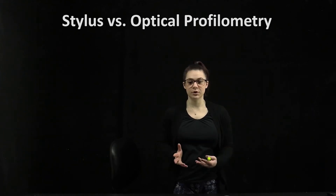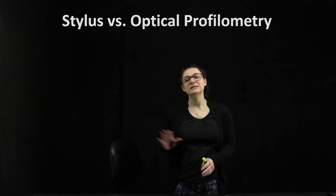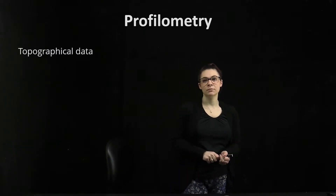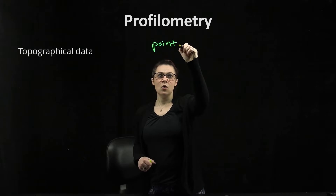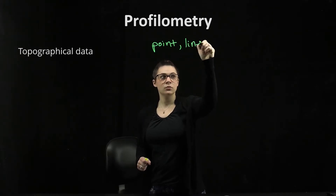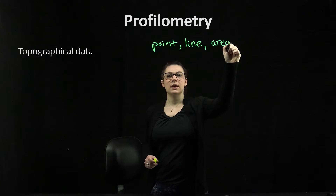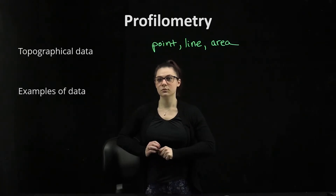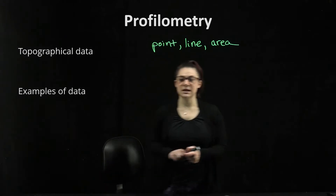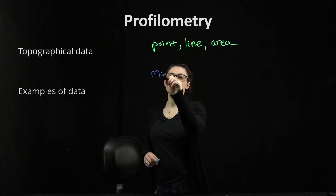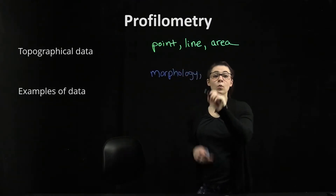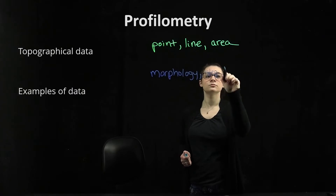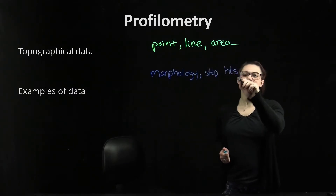We're going to talk today about profilometry, specifically the difference between stylus and optical profilometry. Profilometry gives us topographical data. That data can be in single point, we can do a line scan, or we can get an area scan. Some examples of this data would be surface morphology, step heights, or surface roughness.